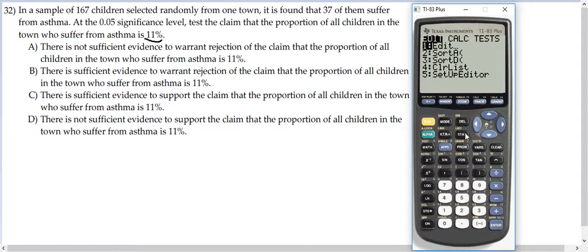Alright, so we're going to compare against 11%. So we go over to test and we get option 5, one proportion Z test. So the claimed proportion is 0.11, we're going to test against that. So we have 37 out of 167 with asthma from our sample.